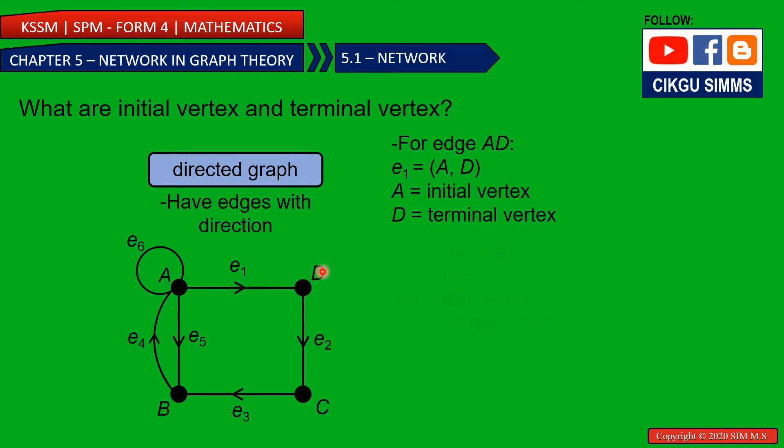So for the second edge, for this edge, for AB, E5. E5, so A is called the initial vertex and then B is called the terminal vertex.